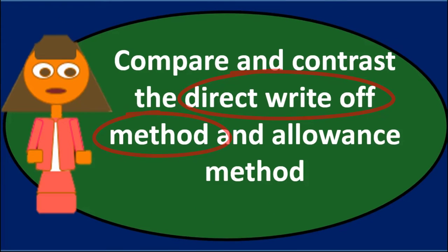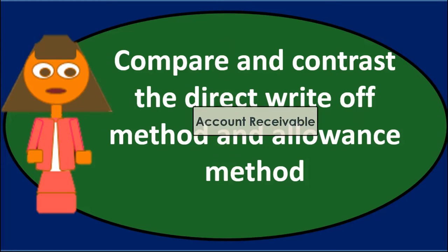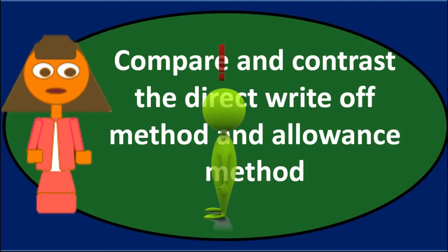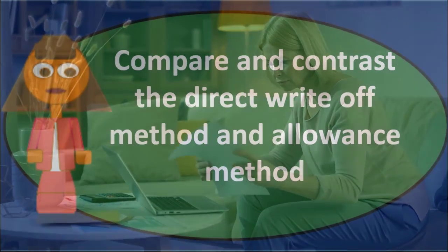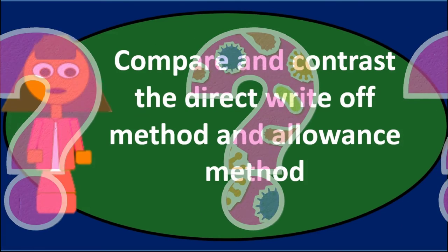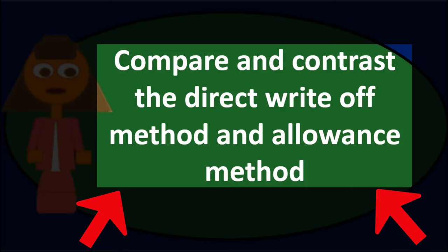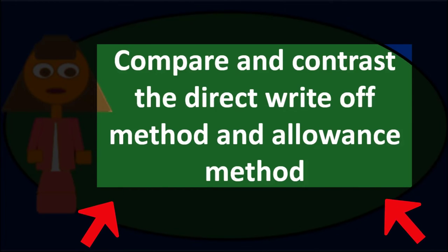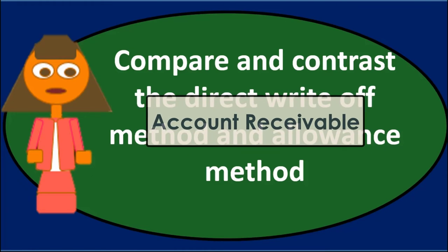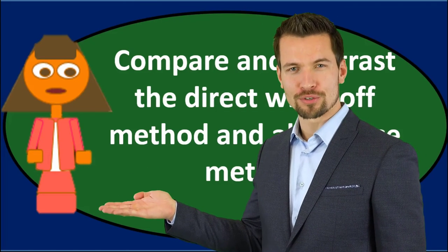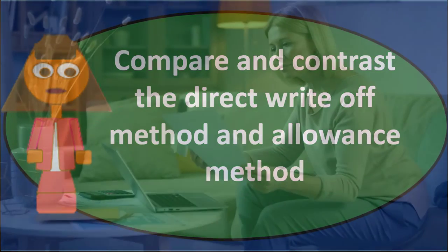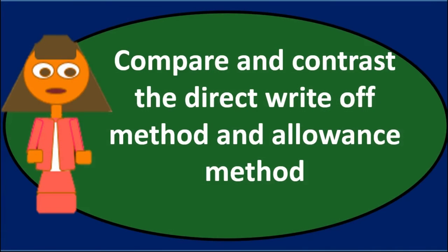The allowance method better aligns with the matching principle. On the balance sheet side, we estimate how much of accounts receivable is uncollectible using an aging analysis and past history. We then set up an allowance for doubtful accounts, which is a contra asset account with a credit balance. The net of accounts receivable minus the allowance represents what we actually believe is collectible, giving readers a clearer and more accurate picture of true receivables.